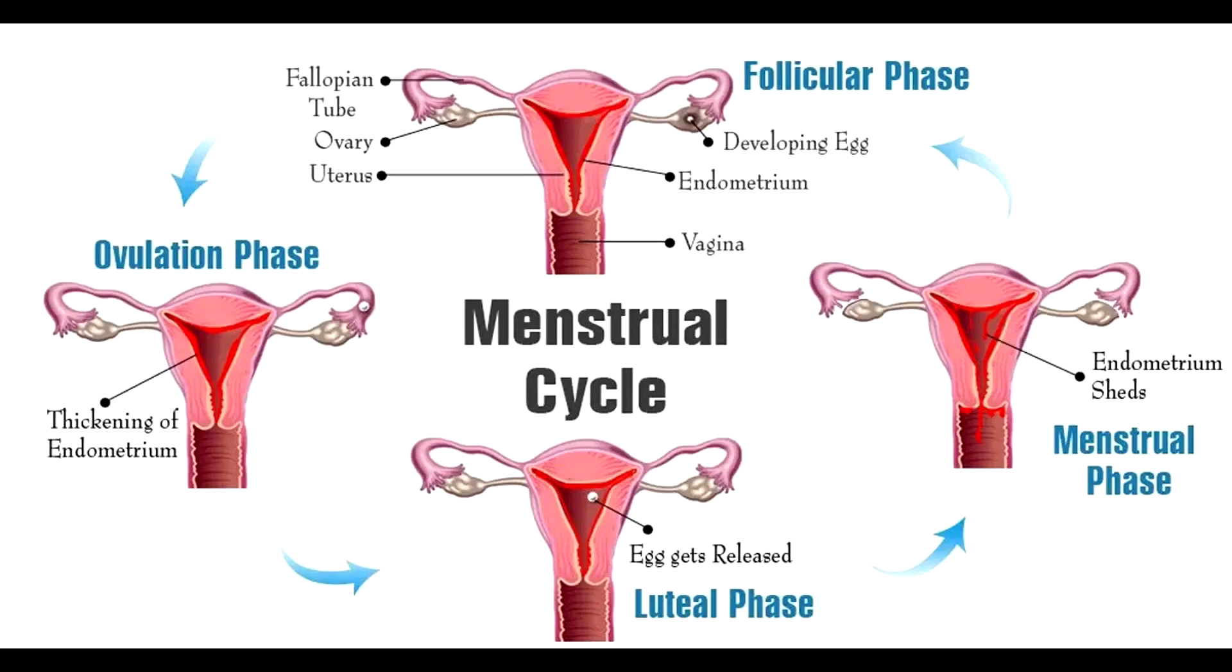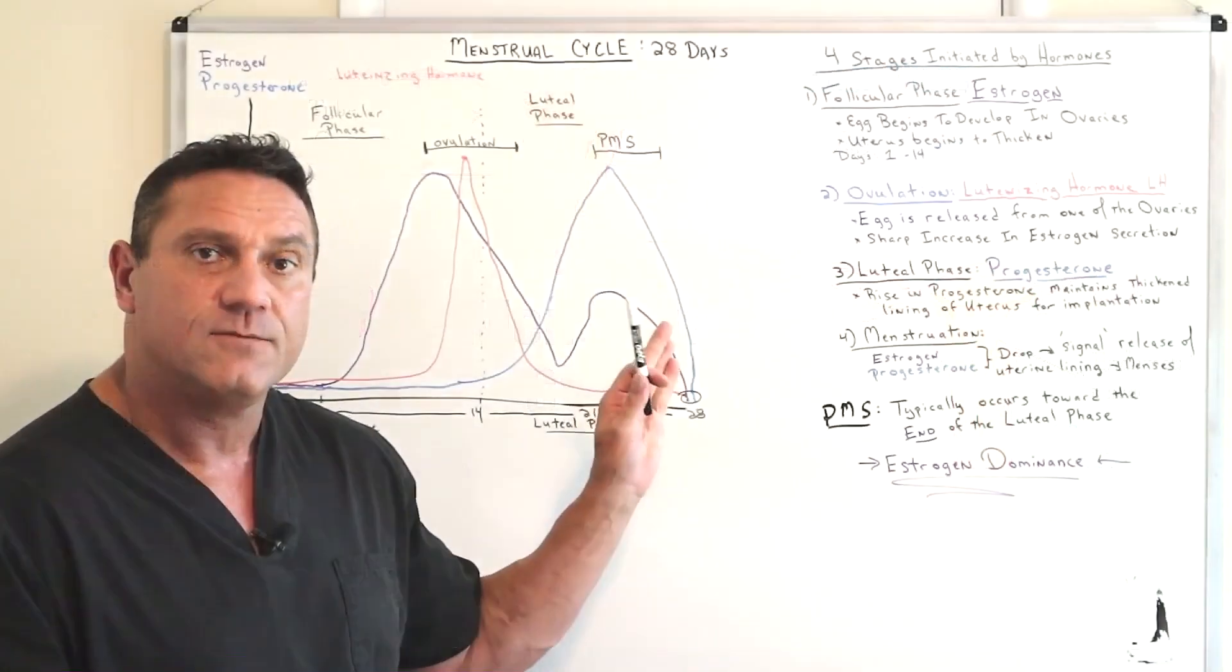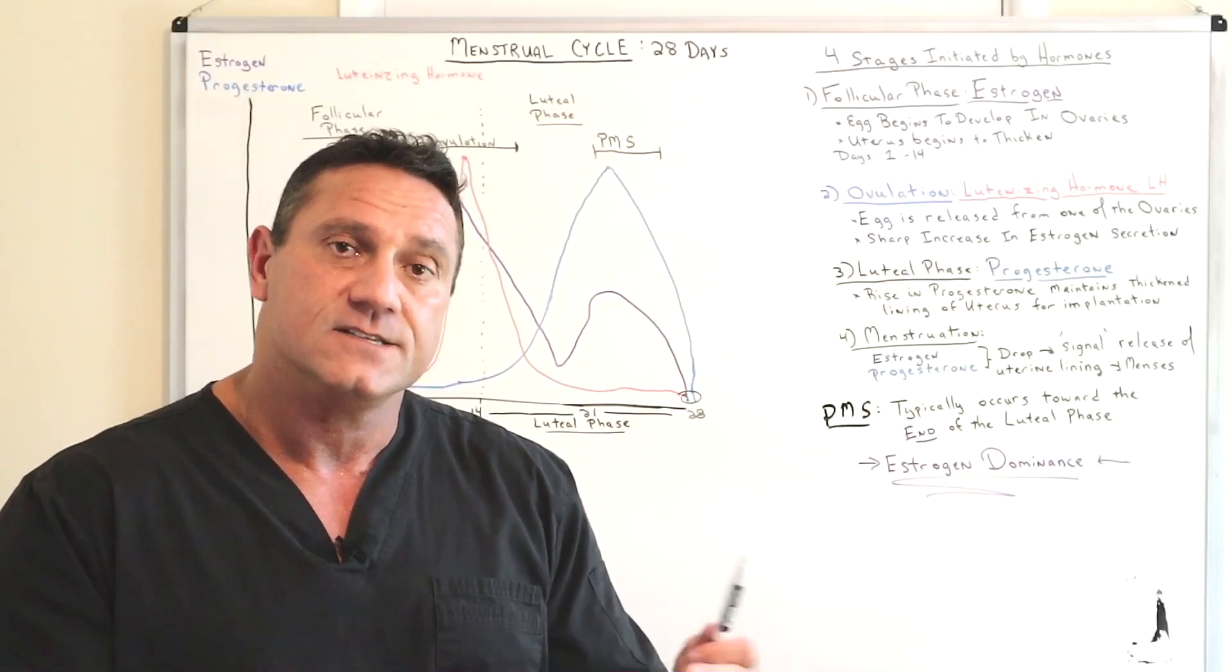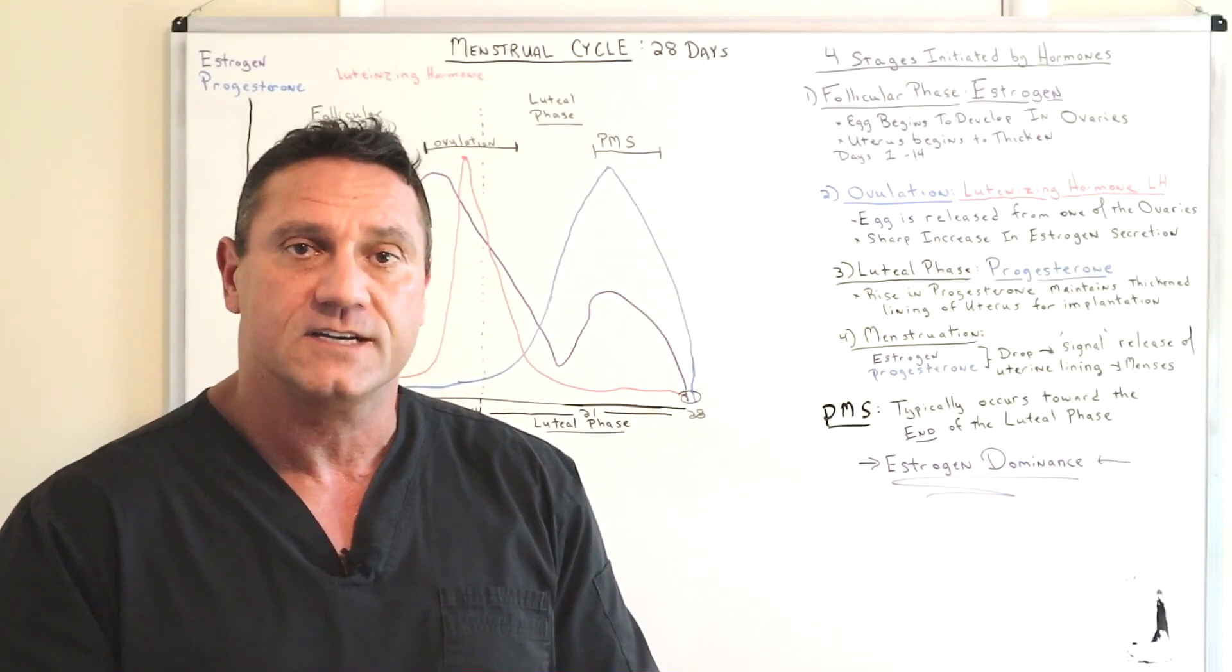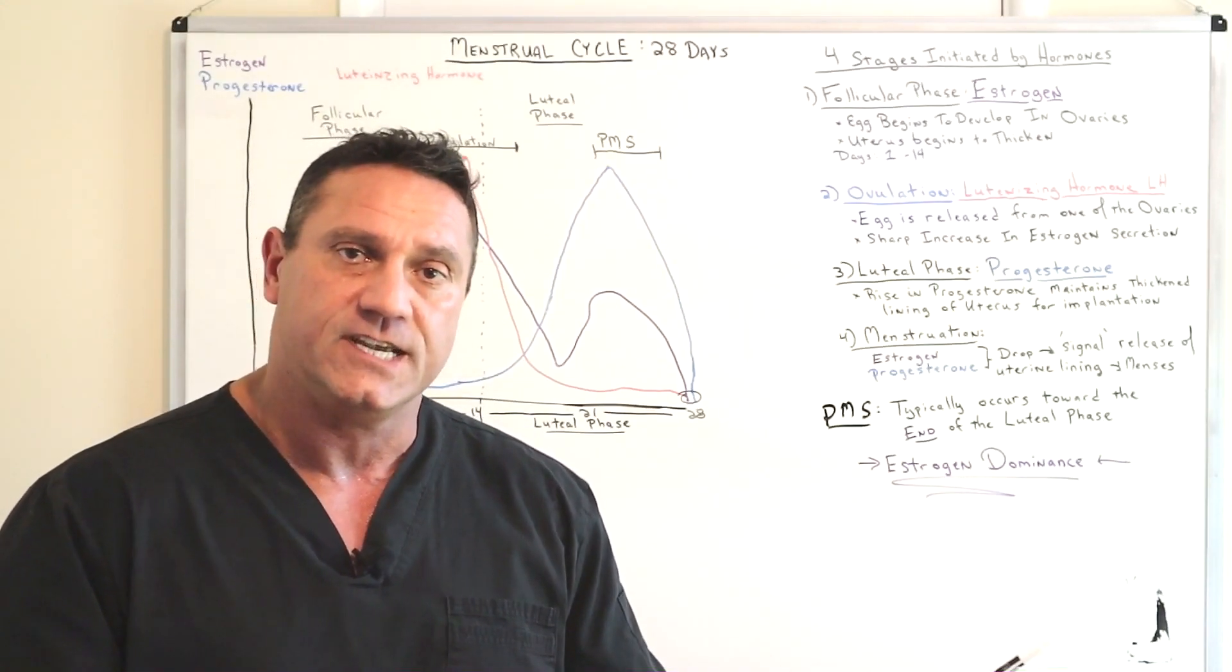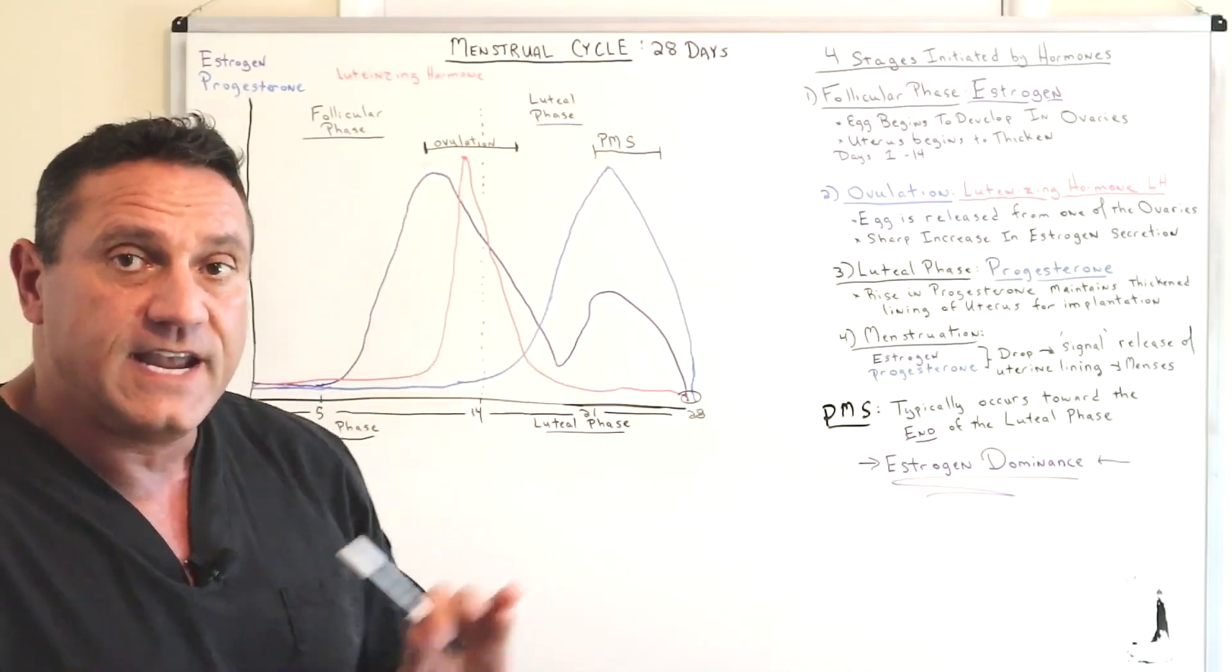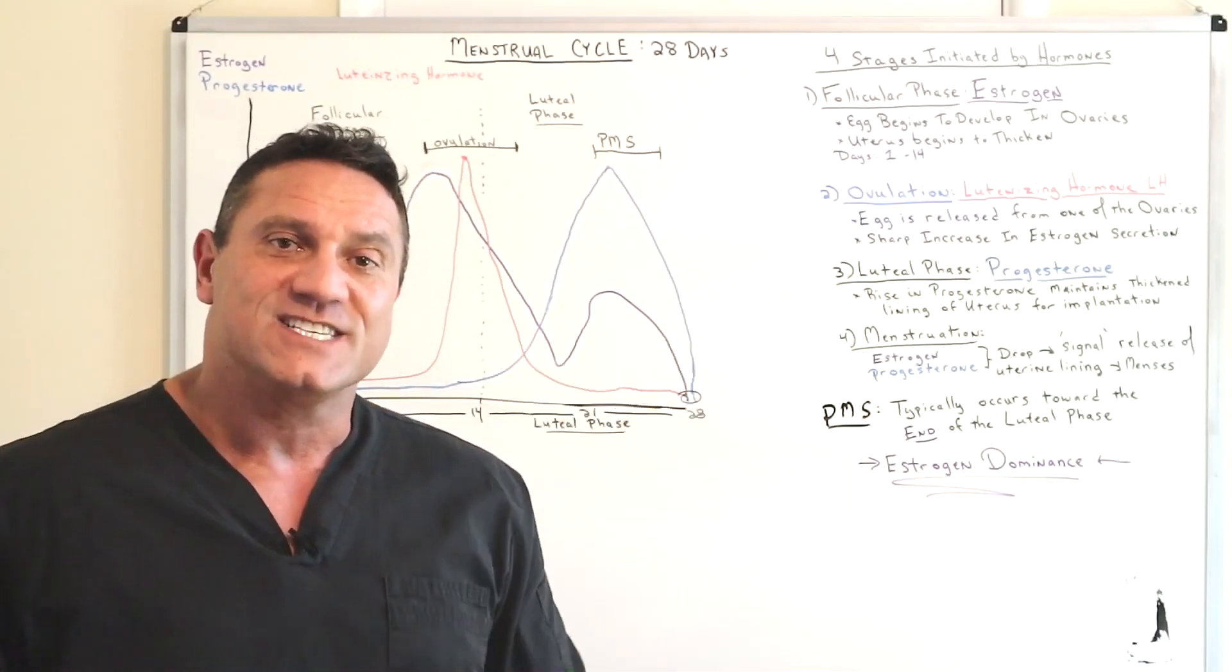Now if they do get pregnant, then what happens? Then the whole different phase happens. And then the secretion of human chorionic gonadotropic hormone, HCG, is released and tells everybody, tells the ovaries, hey, I'm pregnant. Do not release another egg.